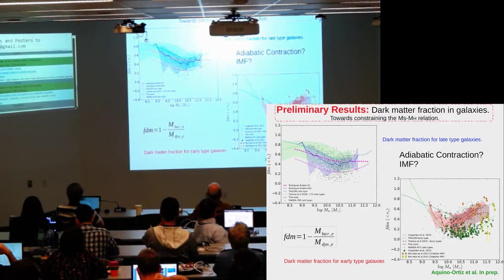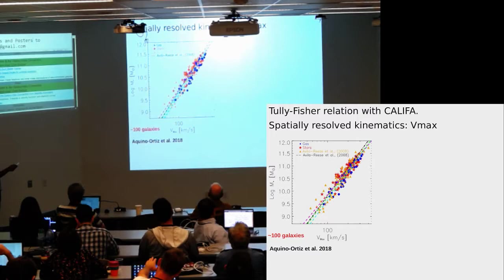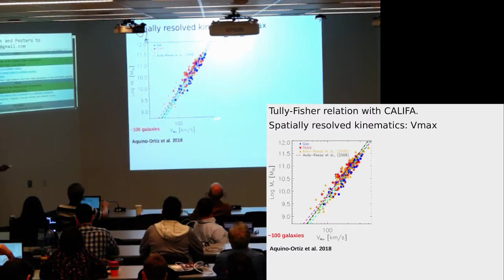All results so far are integrated at one effective radius. But we also explore scaling relations using spatially resolved kinematics. For a golden sample of more or less 100 CALIFA galaxies, we estimate the rotation curve, and from that rotation curve, we estimate the maximum velocity. I show the Tully-Fisher relation using VMAX, comparing with Avila-Reese 2008, and we are in agreement.